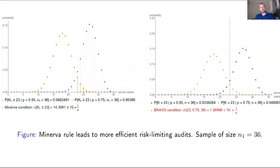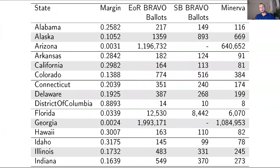This gives us efficiency boost. So Minerva takes, on average, much less ballots than end of round Bravo, and also fewer ballots than original Bravo.